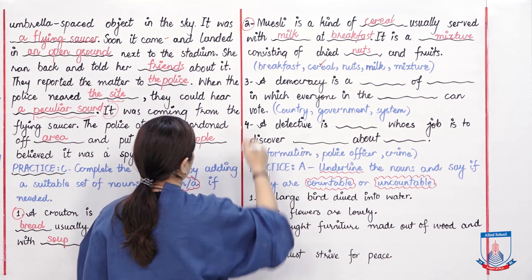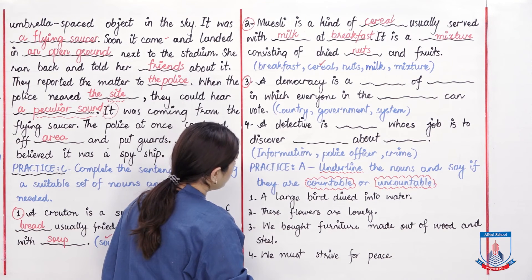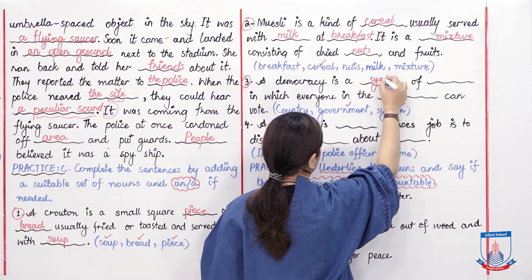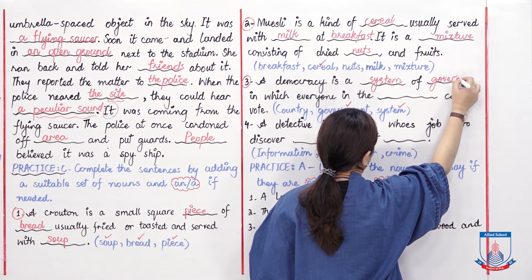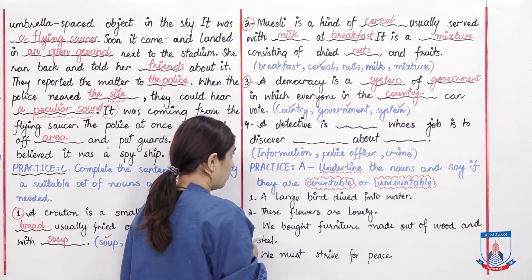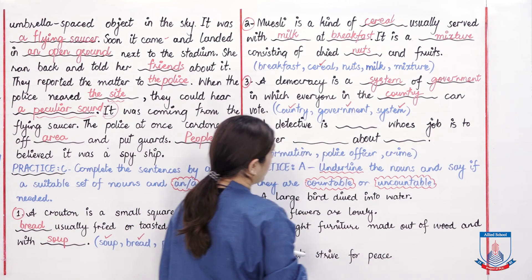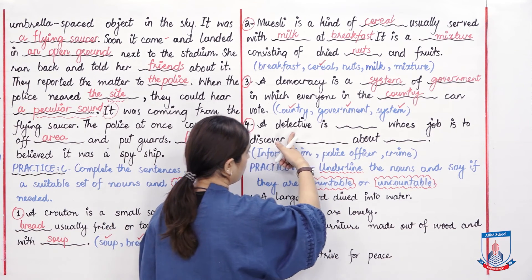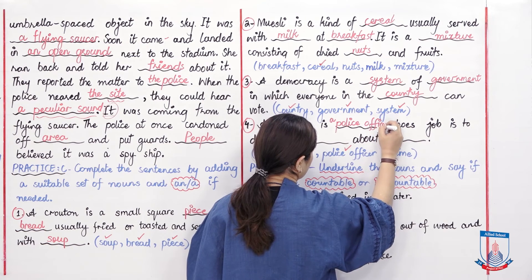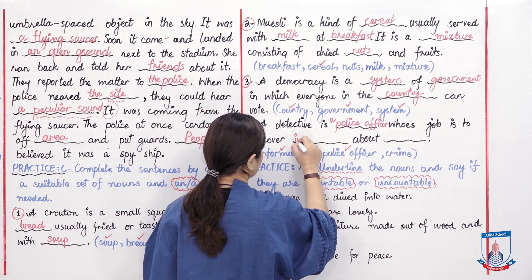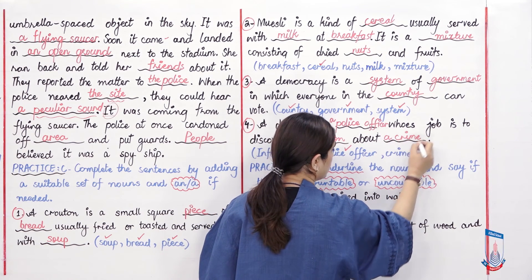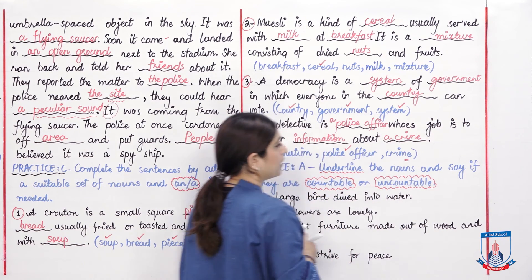Number three: 'A democracy is a system of government in which everyone in the country has a right to vote.' Number four: 'A detective is a police officer whose job is to discover information about a crime.' Since 'crime' is singular here, we use the article 'a' before it. If it were 'crimes' (plural), no article would be needed.